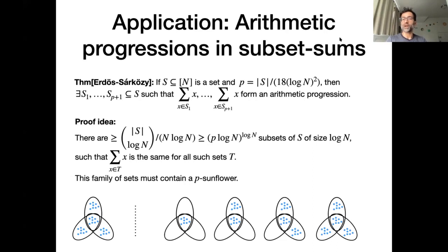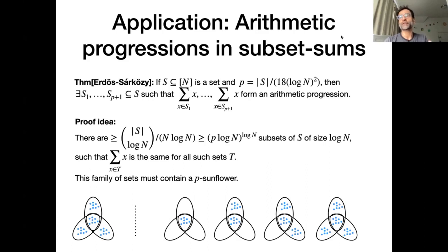I first got interested in this lemma through theoretical computer science, where it has played a very impactful role. One of the really hard problems in theoretical computer science is proving lower bounds on the running times of algorithms. We have ways of designing efficient algorithms, but we can't always tell whether we've hit the optimum — it's hard to prove no better solution exists.